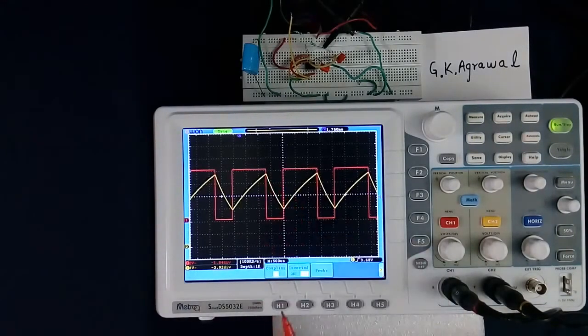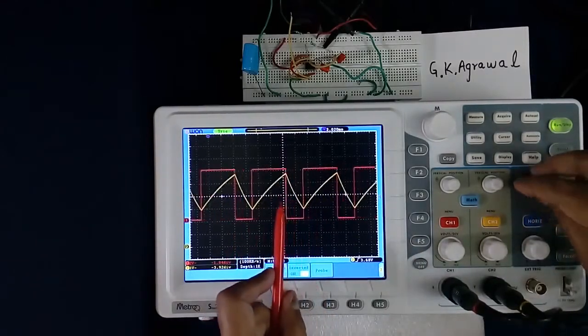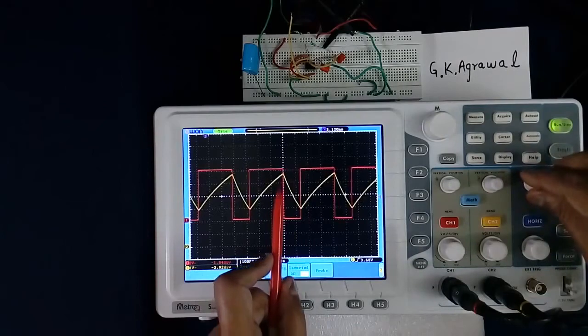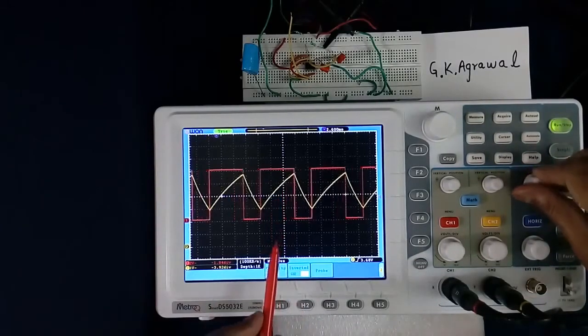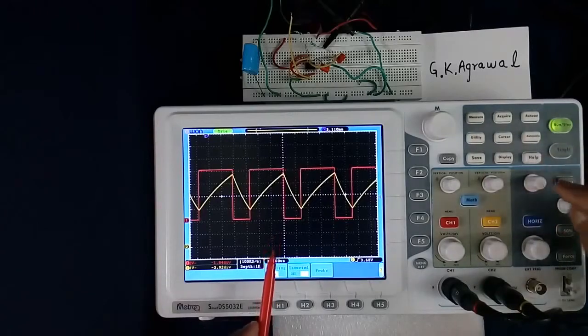Now voltage of this point. We can bring this point - I am shifting just to make it easier to measure. You can keep it anywhere. This is horizontal position control.